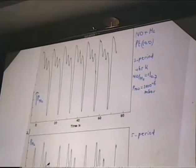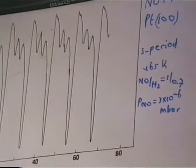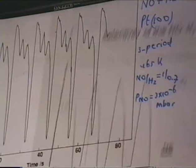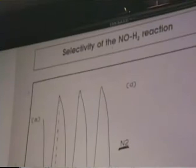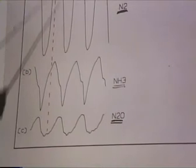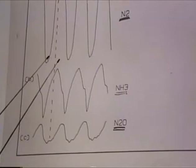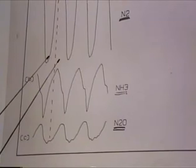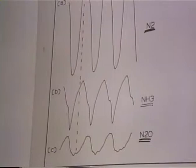This is an example where we have five maxima in just one period — it is a very complicated oscillation. It's not only the activity, the rate of the reaction, but also the selectivity that oscillates in time: dinitrogen formation, ammonia formation, and N2O formation. Dinitrogen is oscillating in phase; NH3 is out of phase; and N2O is also present. That's interesting.